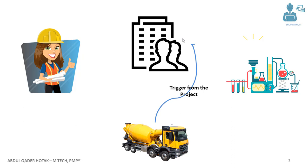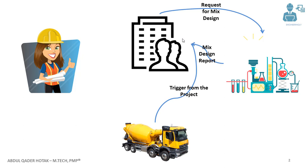The company might check the schedules and see that an activity, including concrete pouring, is approaching. So what the company will do is send a request for the mixed design to the laboratory. The lab, after a while, will provide the company with the mixed design report.